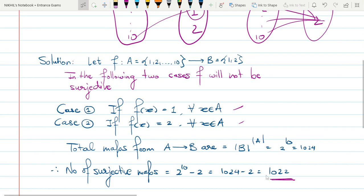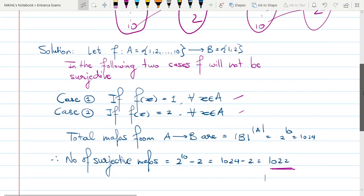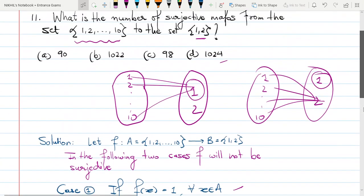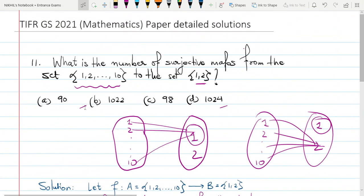So in all the remaining maps, all the remaining cases, my map will be surjective. So 1022 is the answer. It was a pretty straightforward problem. This is the correct option.